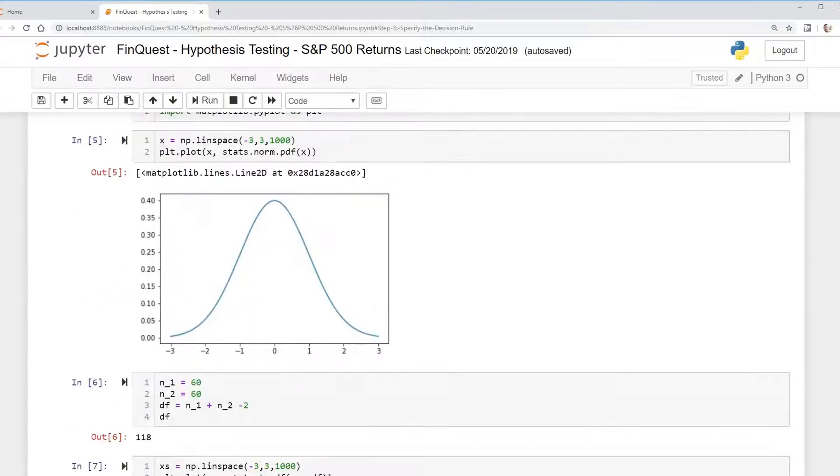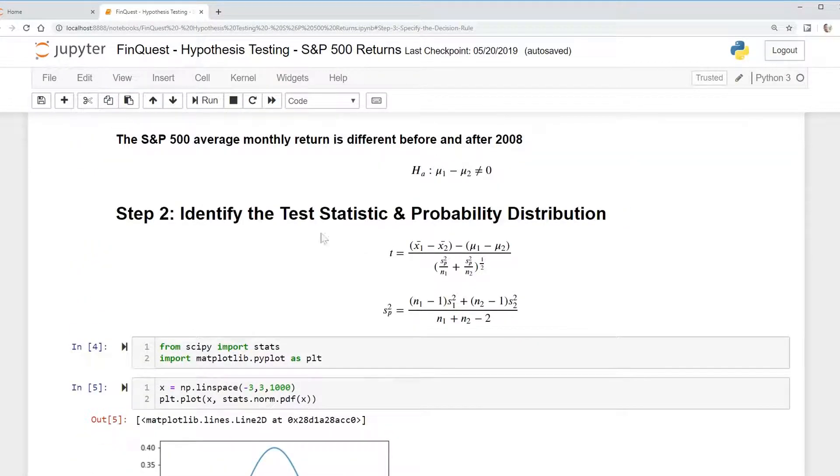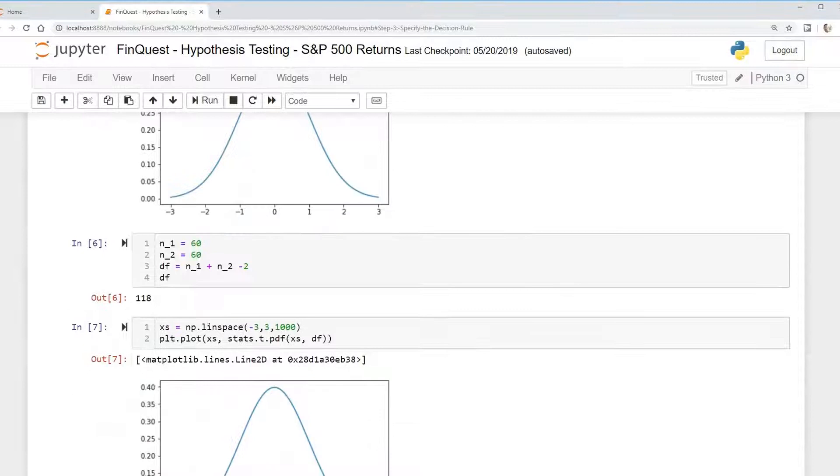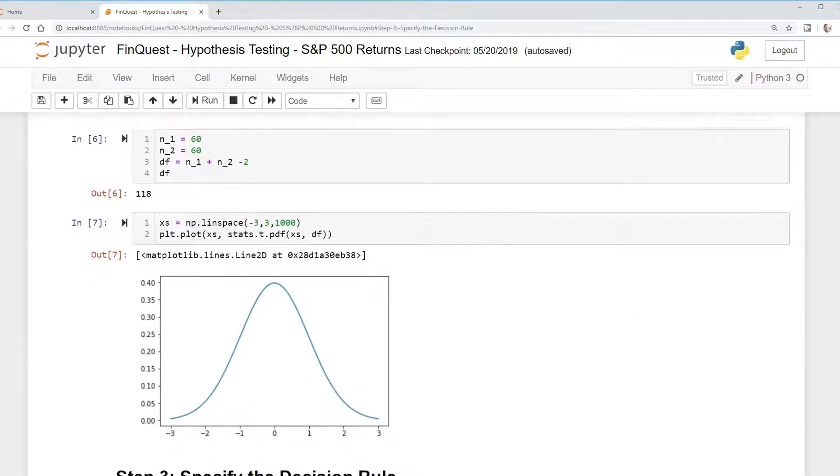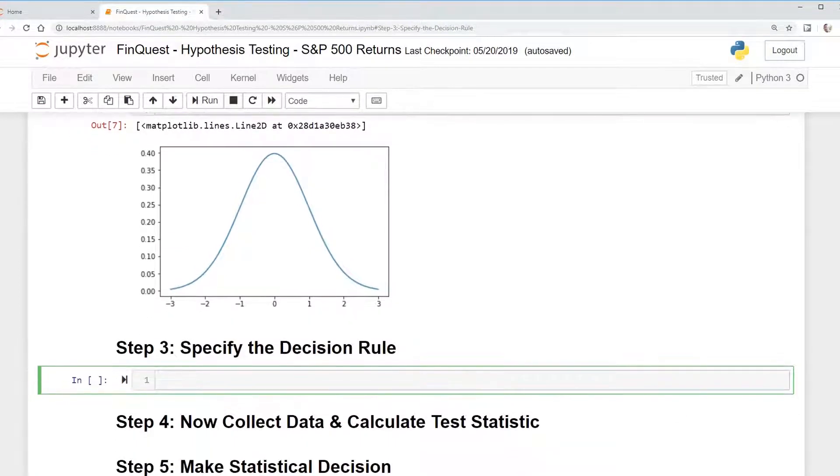So in our last video we determined or identified our test statistic and probability distribution and the formula looked like so. We also determined that the probability distribution would be a t distribution. And now we're going to specify our decision rule.